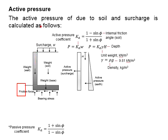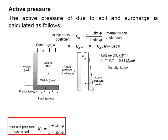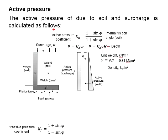The passive pressure is ignored as its contributions cannot be guaranteed. In the case that the passive pressure is utilized in terms of the design, the coefficient of passive pressure is used. The equations to determine the passive pressure are similar to the equations for active pressure, only that the coefficient is substituted with the passive pressure coefficient.